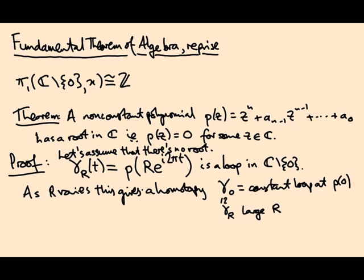But if they're freely homotopic like this, then they are base homotopic because the fundamental group is abelian. The fundamental group of the punctured complex plane is Z, which is abelian. So in the previous video, we saw that means a base homotopy and a free homotopy are the same thing. So we just assume this is a base homotopy.